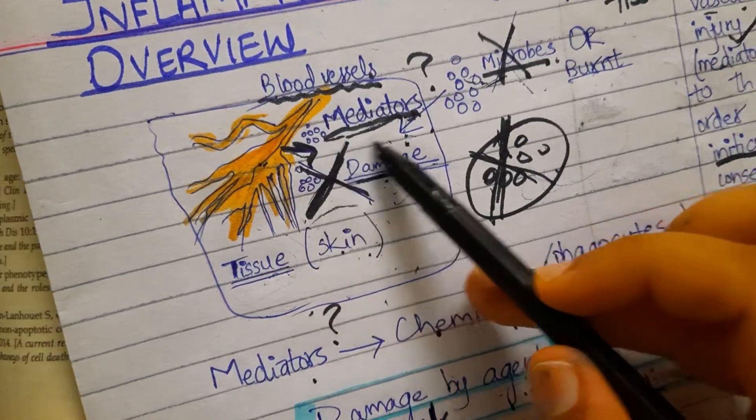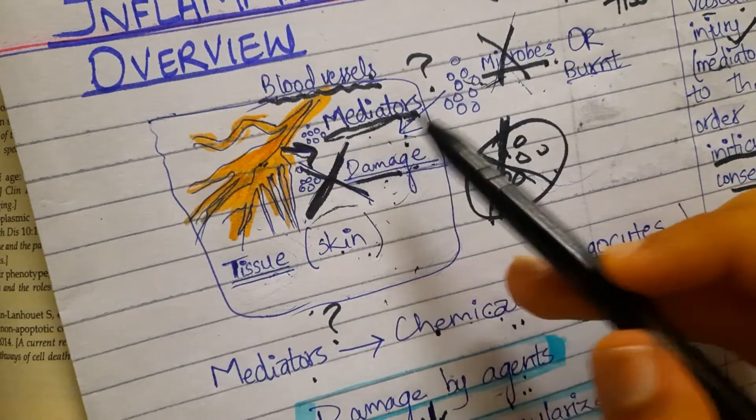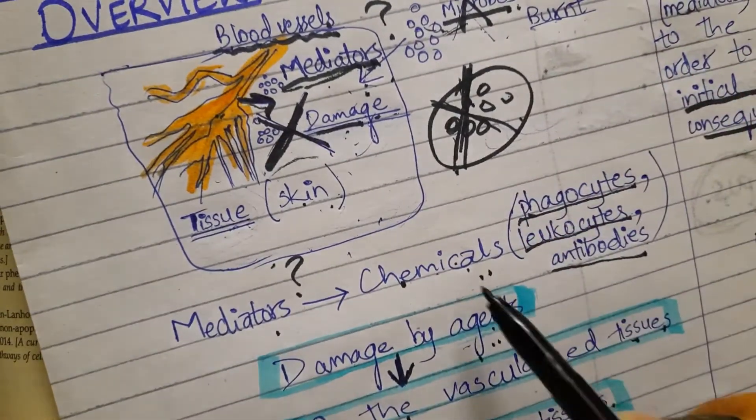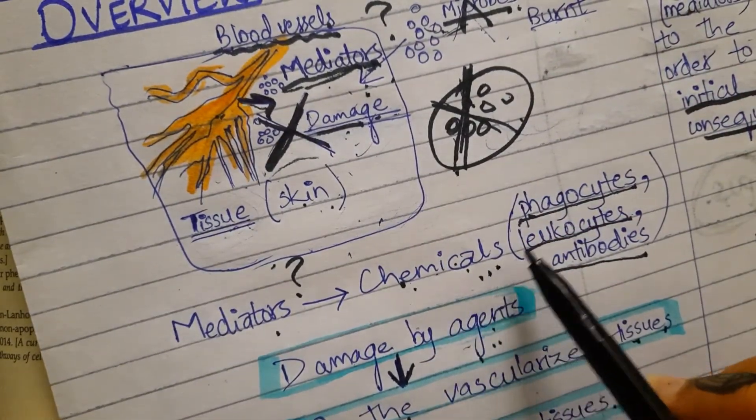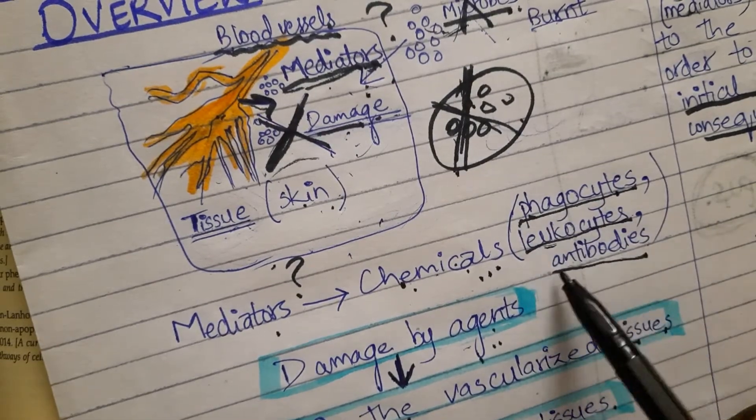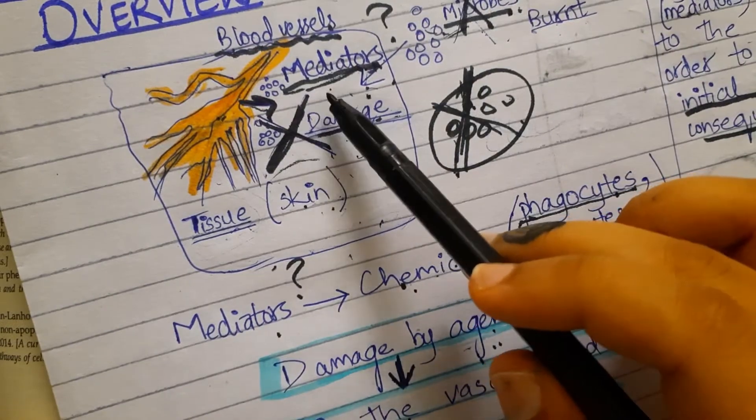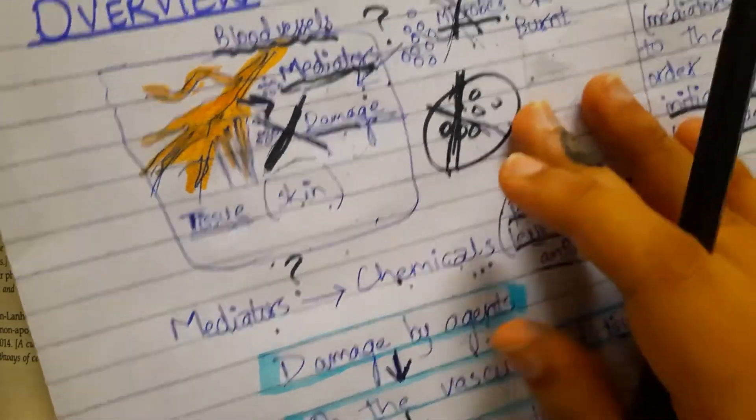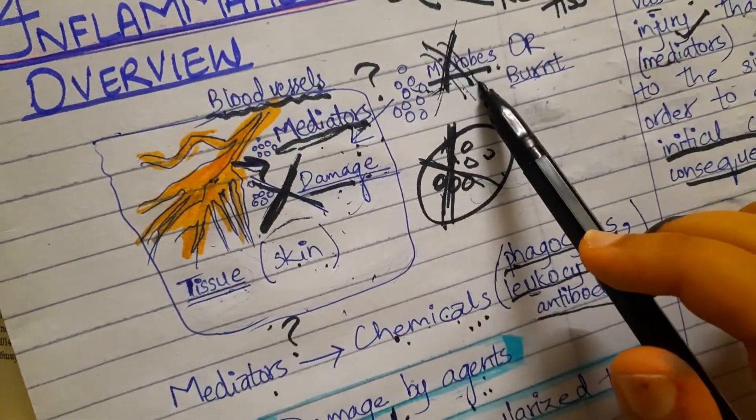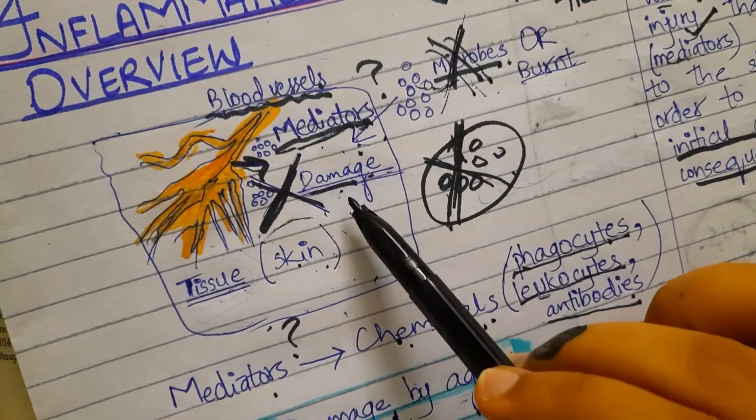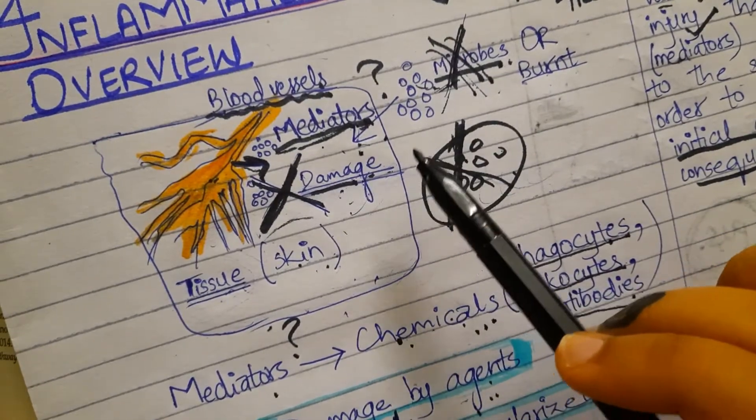What are basically the mediators? Mediators are basically the chemicals like phagocytes, leukocytes, antibodies. These mediators will destroy the microbes. They will not only destroy the microbes but they will also overcome the necrotic tissue.